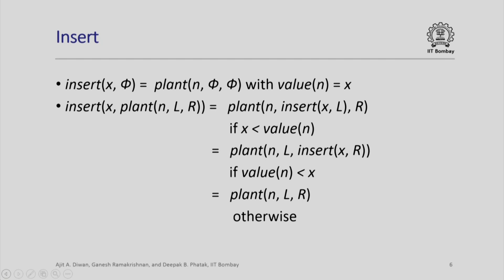If inserting x into an already existing tree plant(n, l, r), again we use the BST property. If x is less than value(n), then x must be inserted in the left subtree, so the new tree is plant(n, insert(x, l), r). If value(n) is less than x, then we insert into the right subtree, giving plant(n, l, insert(x, r)).